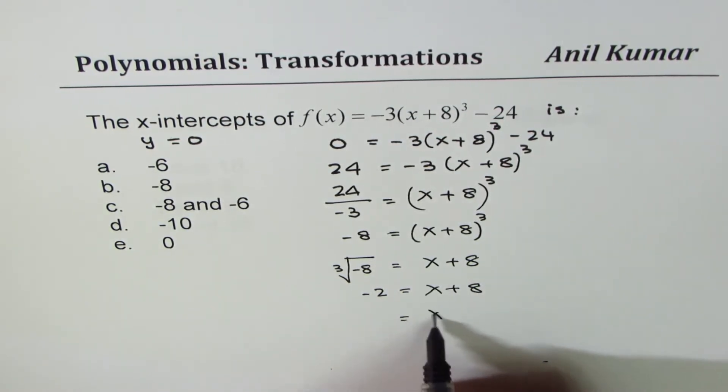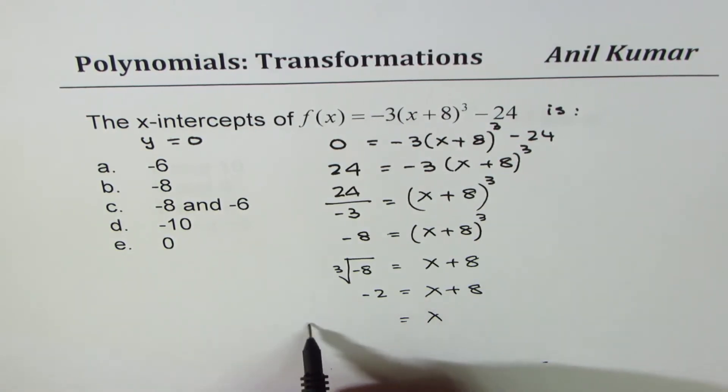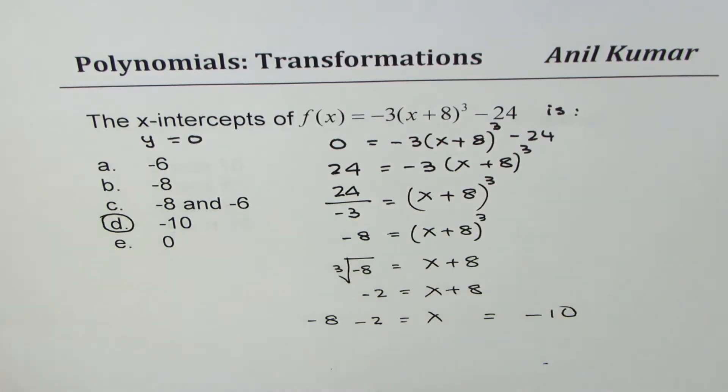So x is equal to, bringing 8 to the left side, it gives us minus 8 and minus 2. And that gives us the answer x is equal to, let me write here, minus 10. And therefore, option D is the correct option. Perfect.